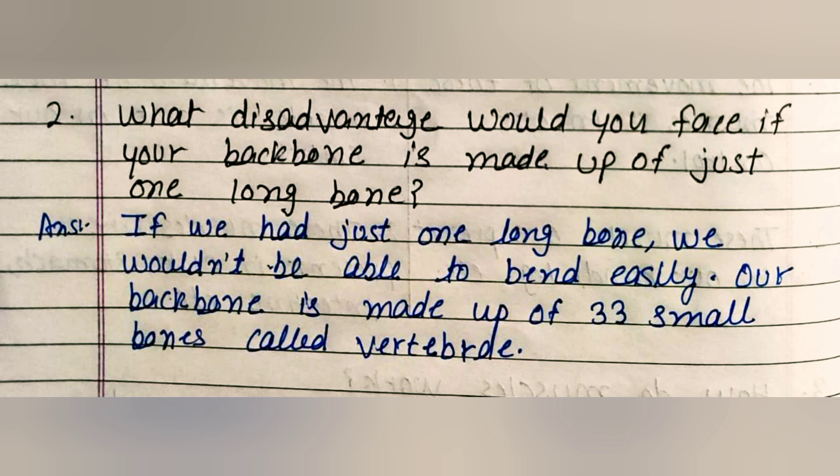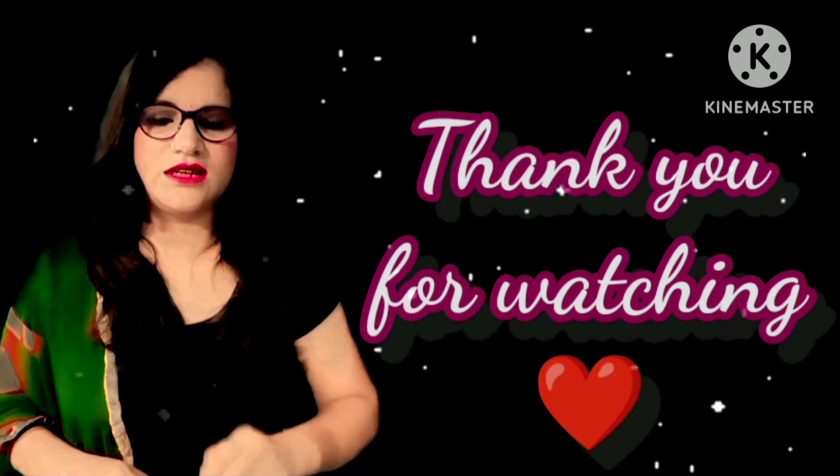Question two: What disadvantage would you face if your backbone were made up of just one long bone? If we had just one long bone, we would not be able to bend easily. Our backbone is made up of 33 small bones called vertebrae. With this, we have completed this chapter. Thank you so much, bye bye.